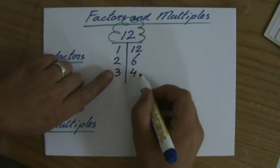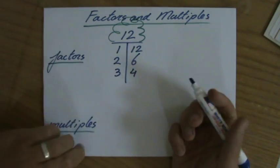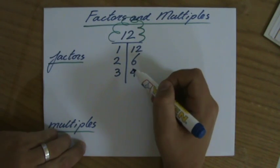And 4 times 3, but I already have those factors. So I'm finished now. I have 1, 2, 3, 4, 5, 6 factors.